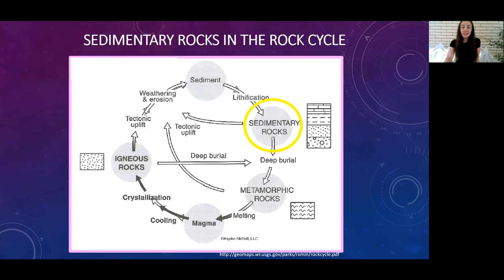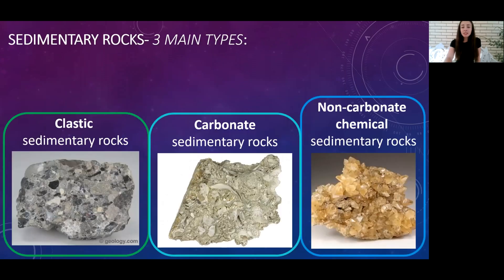However, there are other ways to form sedimentary rocks. It's not only from old sediment that has been weathered and eroded; they can also form from chemical precipitation. The three main types of sedimentary rocks include clastic sedimentary rocks, carbonate sedimentary rocks, and non-carbonate chemical sedimentary rocks.